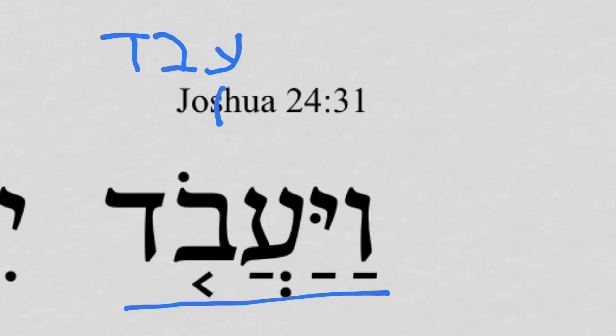Now in this case, it begins with an ayin, making it a peh-ayin word — a guttural. And so that's how we account for the pathach under the prefix pronoun. So it's not a hiphil, even though it gives that look, but rather a qal.